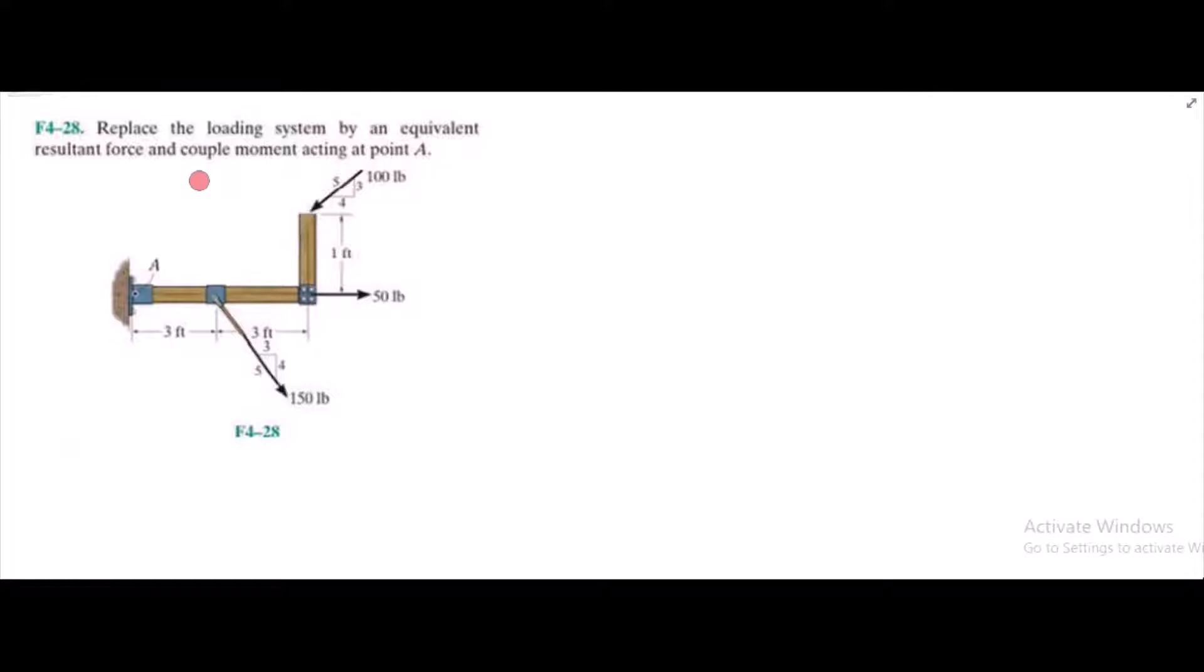So to solve this problem, first of all, we have to resolve these two forces into their components. For the 100 lb force, I have one vertical component and one horizontal component. Let's label them. This component is 100 times 3 over 5, this component is 100 times 4 over 5.